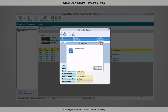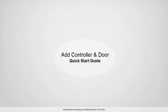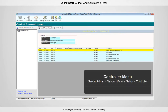Now you have successfully added a new connection using LAN and direct serial port. In this step, you are going to add your controller and door. Open your X-Portal 2005 server. To open the controller menu, select Server Admin, then System Device Setup, and then Controller.